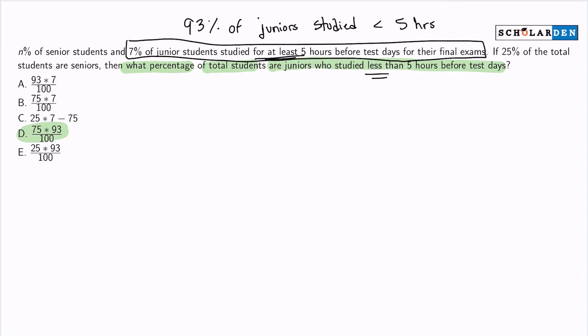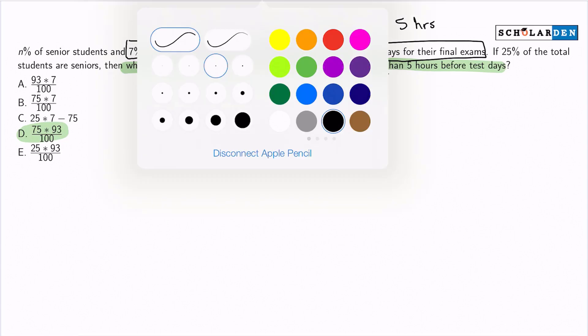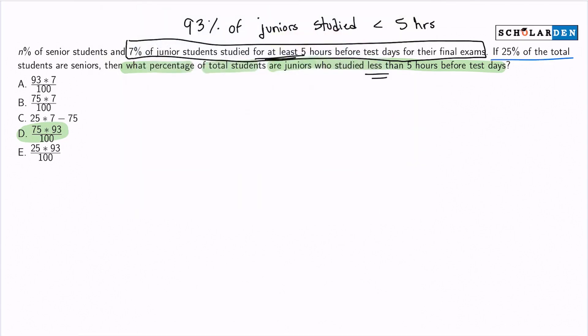But remember, we're referring to the total number of students. So how are we going to take care of that? Well, notice this. We're given that 25 percent of the total students are seniors. That means that 75 percent are juniors. We can assume that we're only discussing juniors and seniors because we're not talking about sophomores and freshmen. So we have 75 percent are juniors, and this is of the total group.